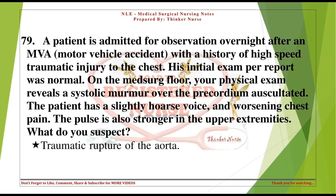A patient is admitted for observation after a high-speed MVA with chest trauma. Initial exam was normal, but on the med-surg floor a systolic murmur over the precordium is auscultated. The patient has a slightly hoarse voice, worsening chest pain, and a pulse stronger in the upper extremities. Traumatic rupture of the aorta is suspected.